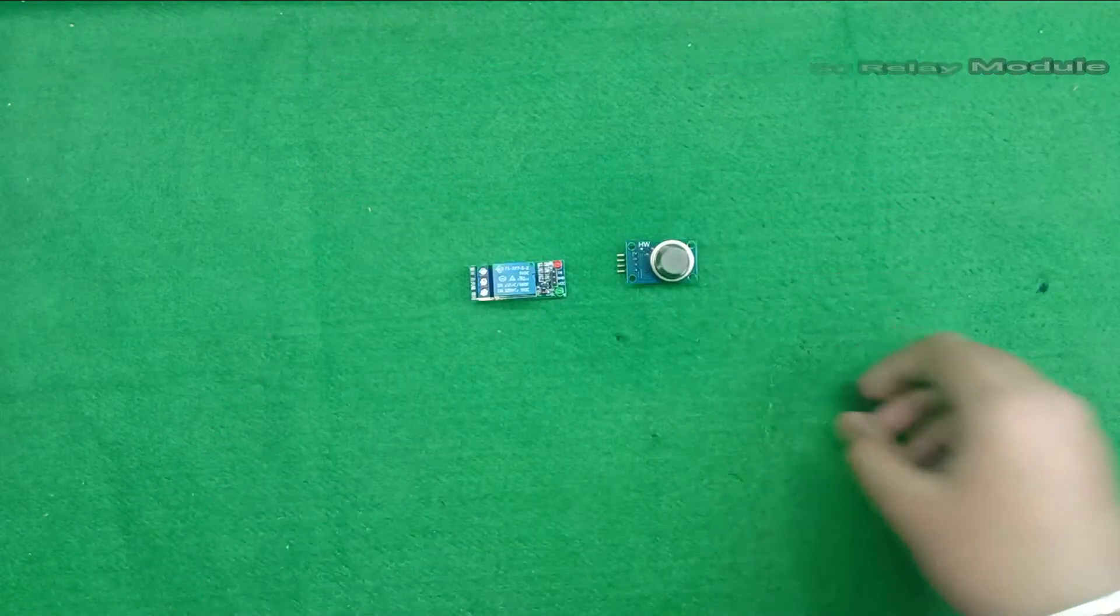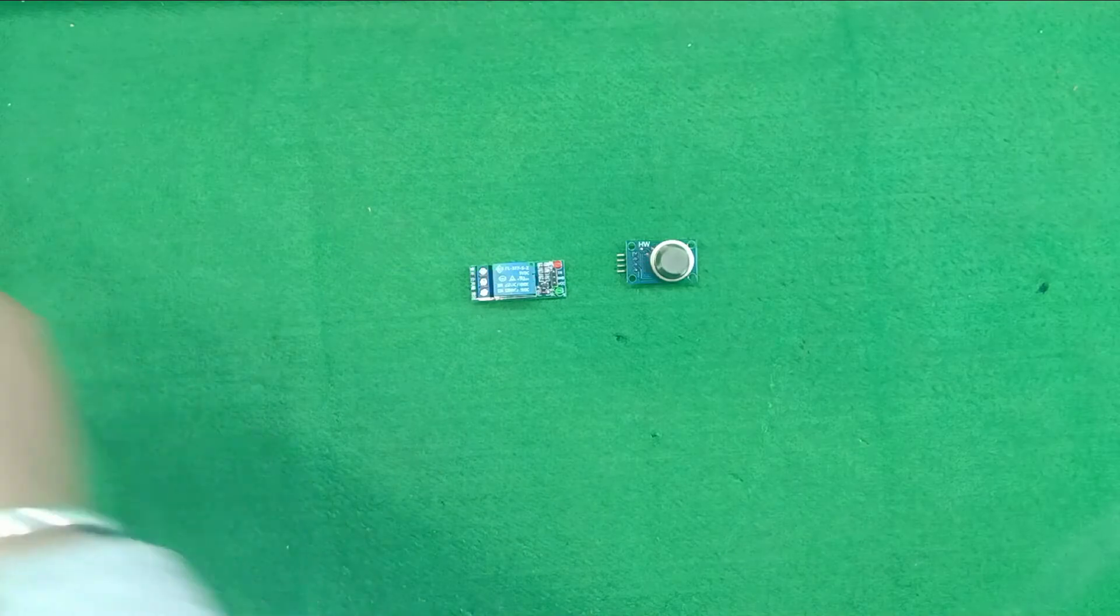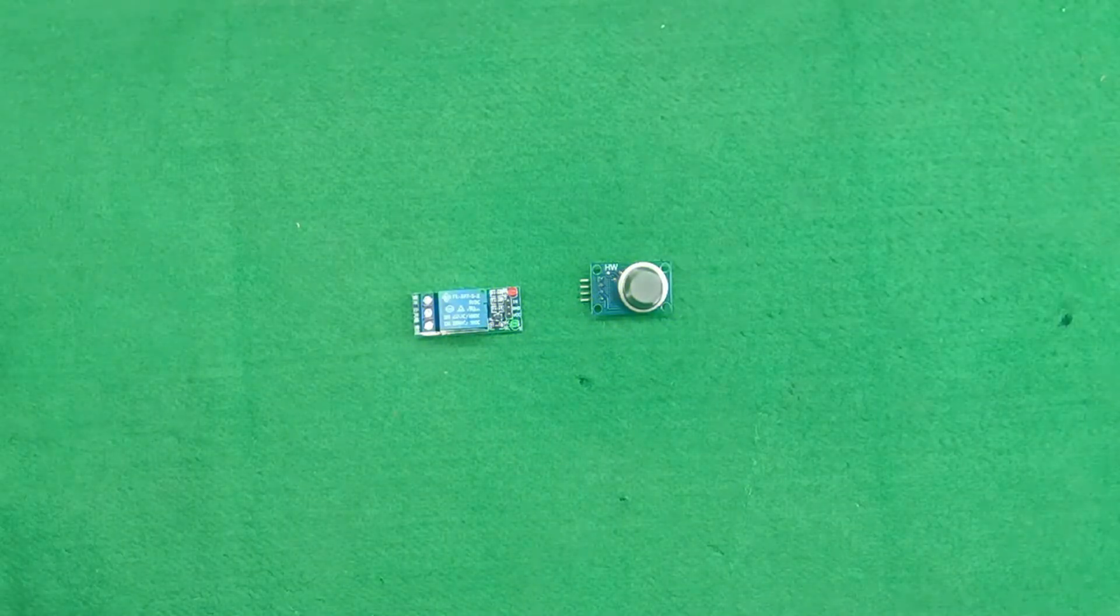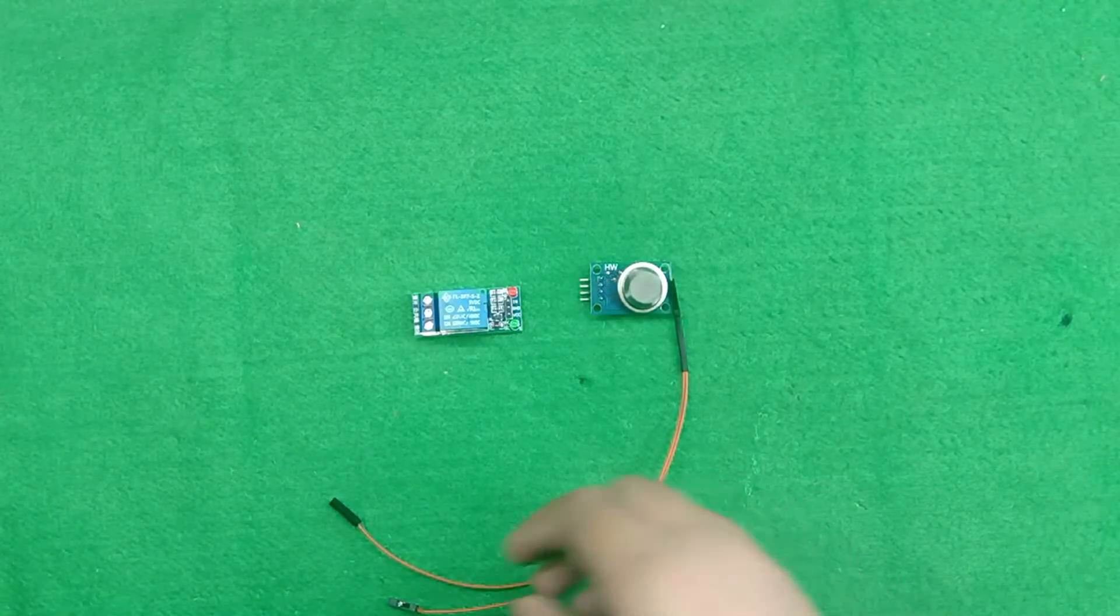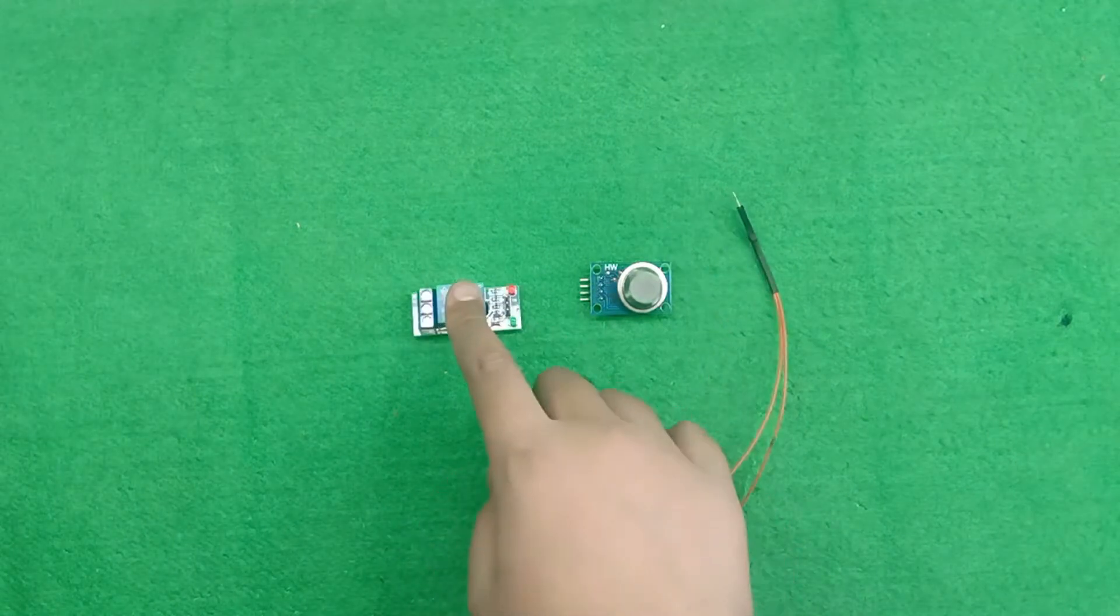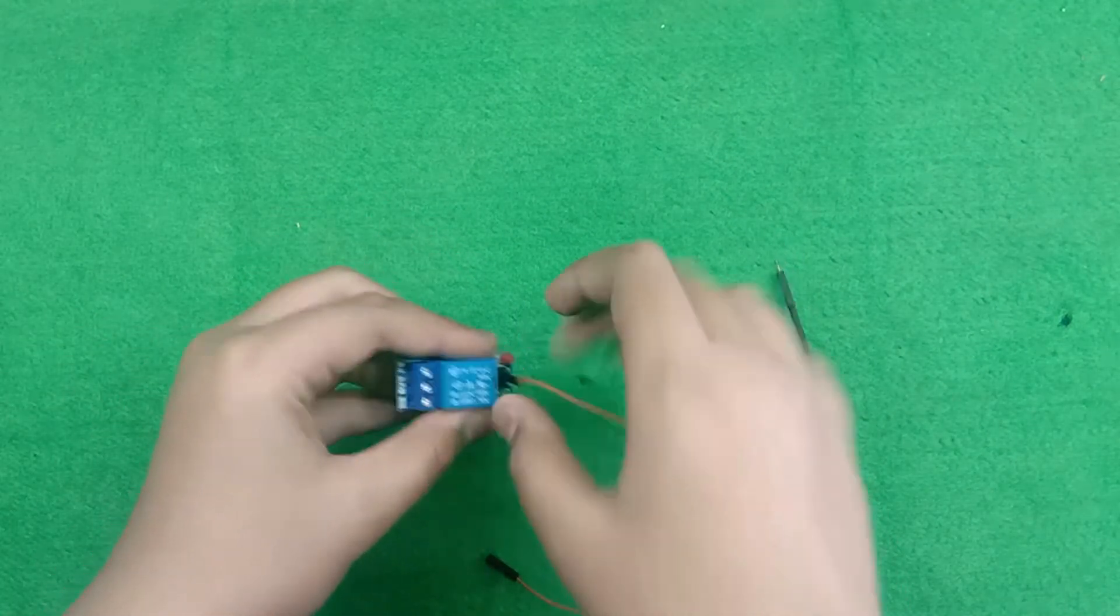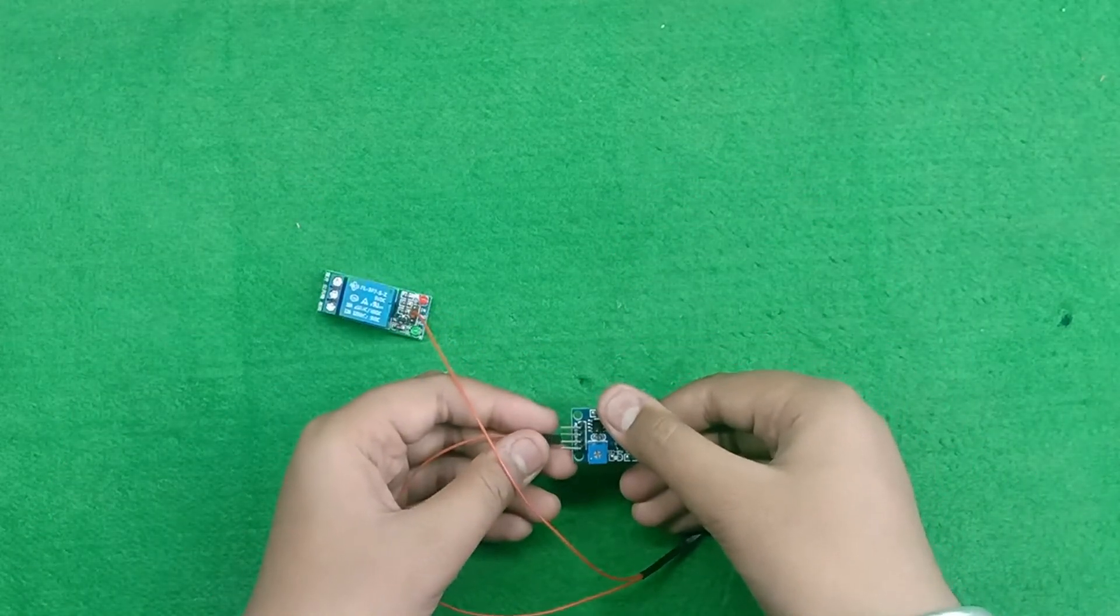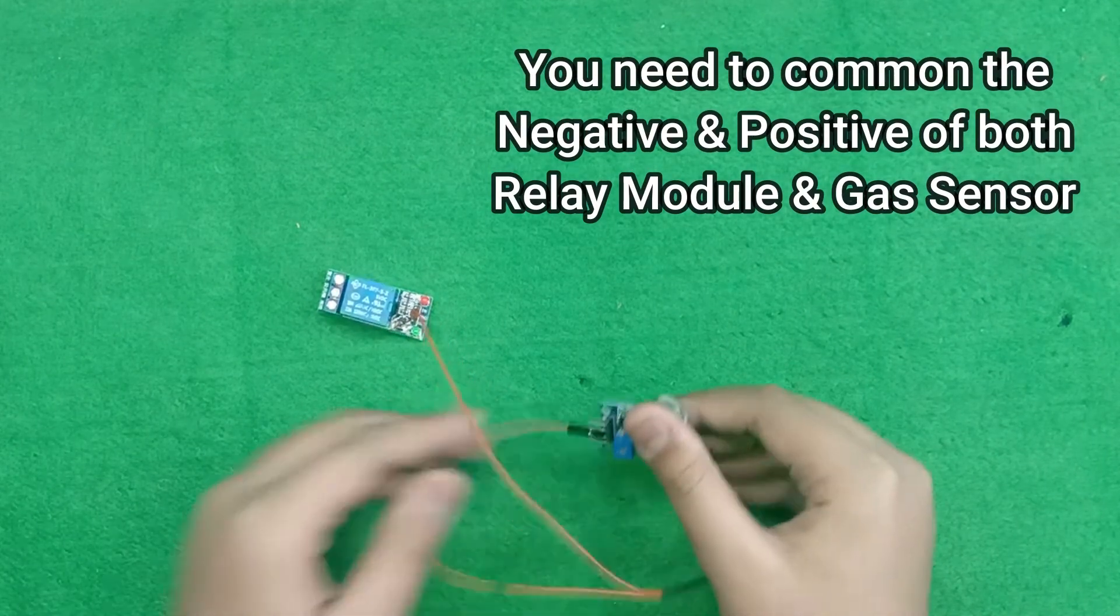So, let's connect this with the help of jumper wires. First, connect the negative or ground of both relay module and MQ sensor. Negative of relay module and negative of MQ sensor is now common.